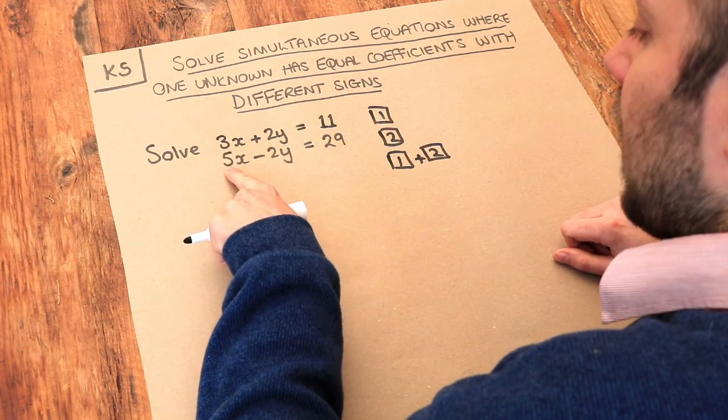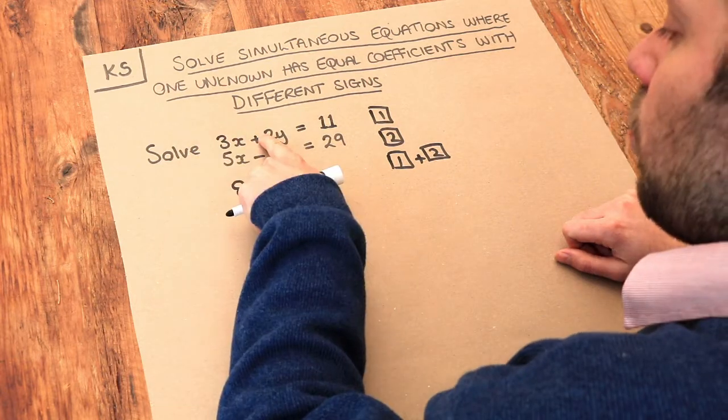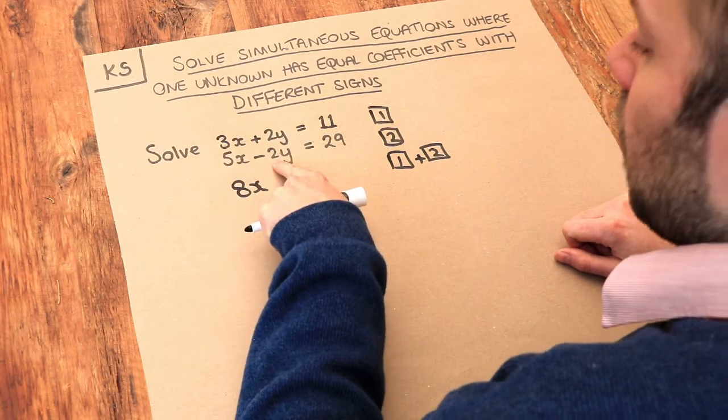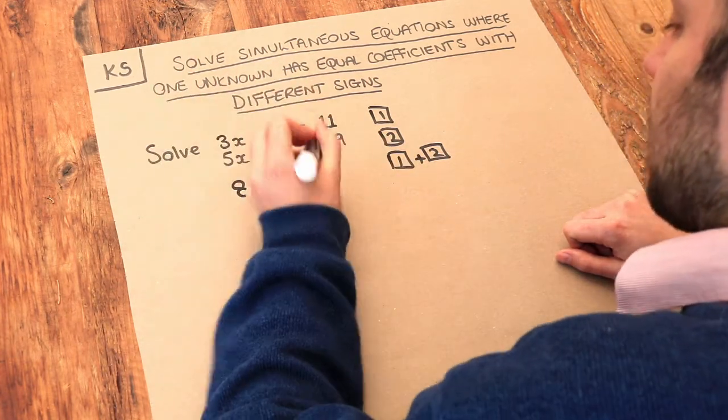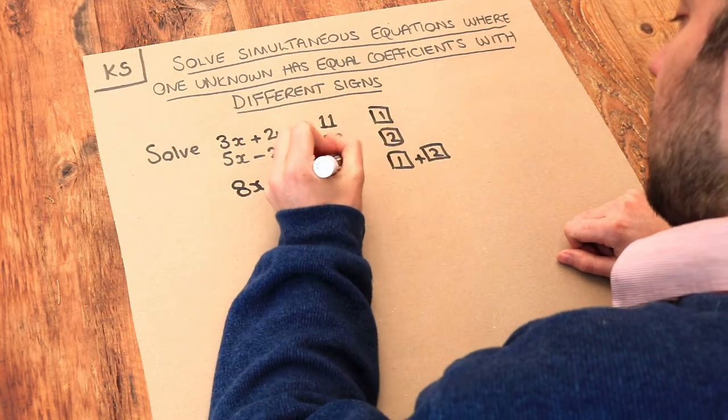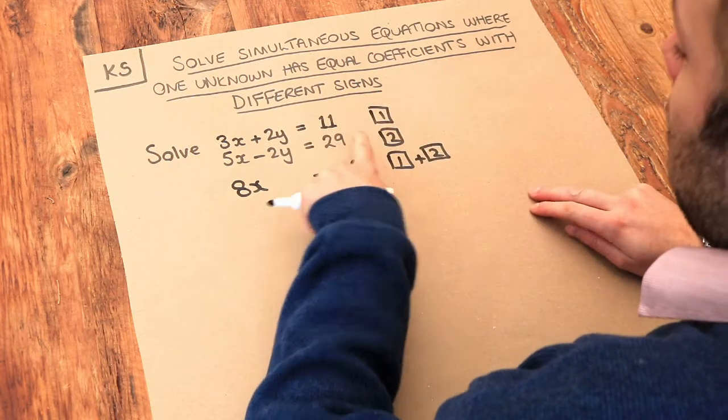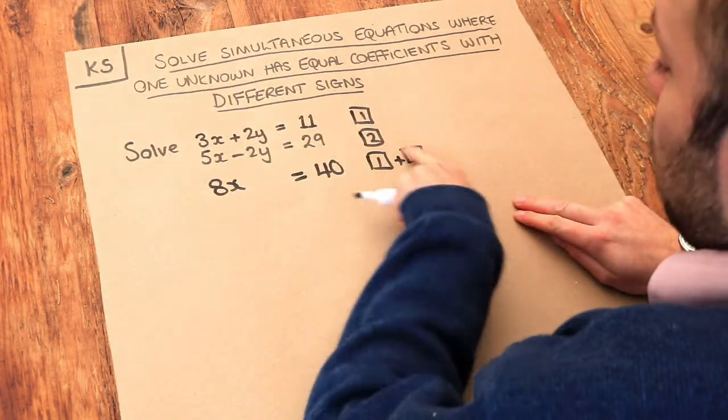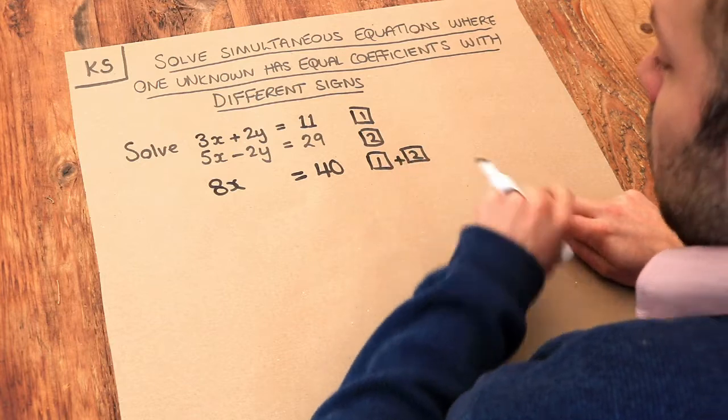This plus this, 3x plus 5x is 8x. 2y plus negative 2y, 2 plus minus 2 is 0, so that just cancels. And then 11 plus 29 is 40. A common mistake is that students just forget whether they're adding or subtracting these equations, which is why I find it helpful to write out what we're doing here.